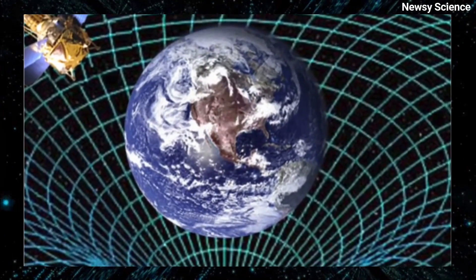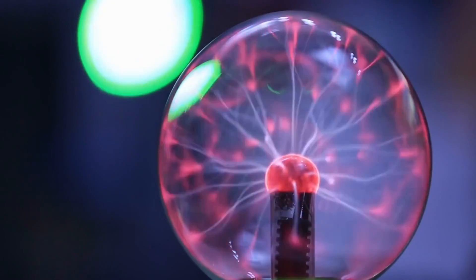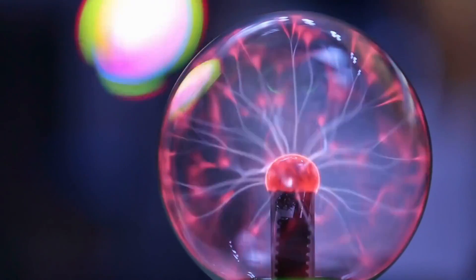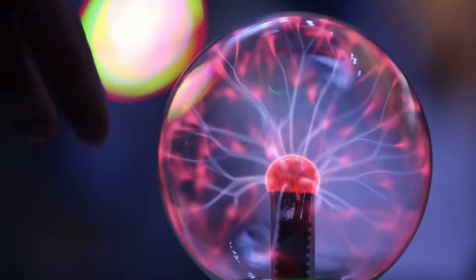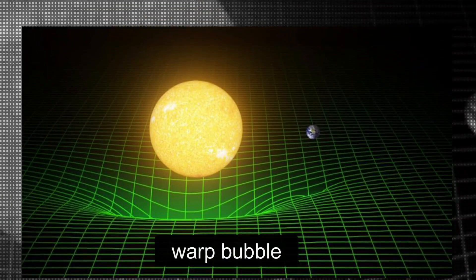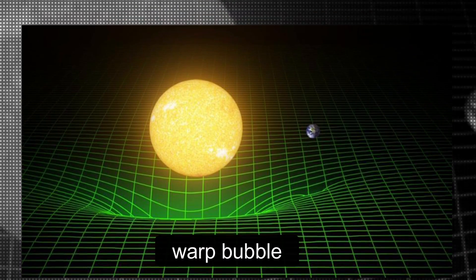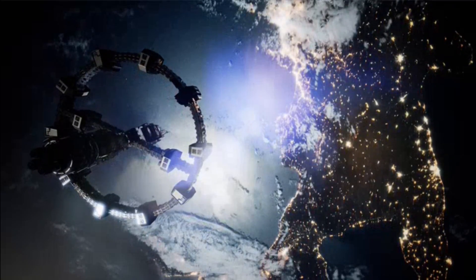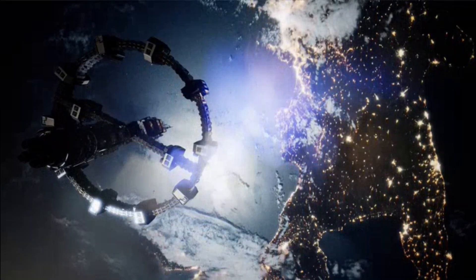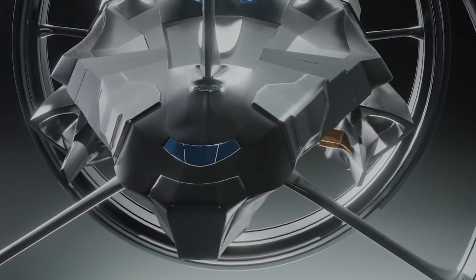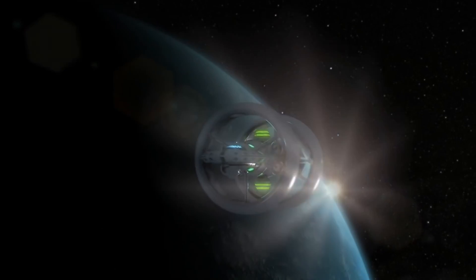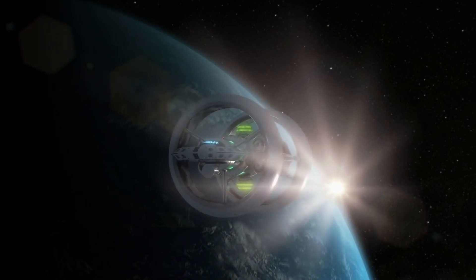To create a warp bubble, you must first generate negative energy. Negative energy is a physics concept that involves creating a region of space-time with a negative energy density. By expanding the space-time behind the spaceship and contracting the space-time in front of the spaceship, this negative energy can be used to create a warp bubble. The spaceship would then ride the expanding wave of space-time, allowing it to travel faster than the speed of light.